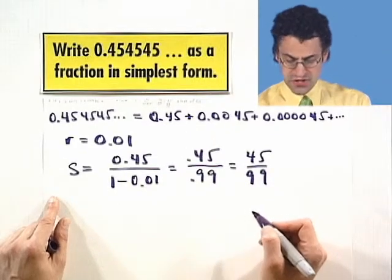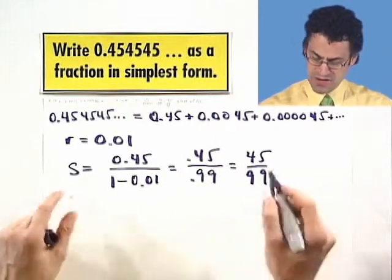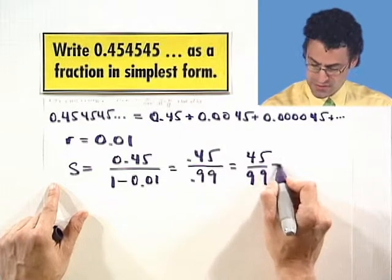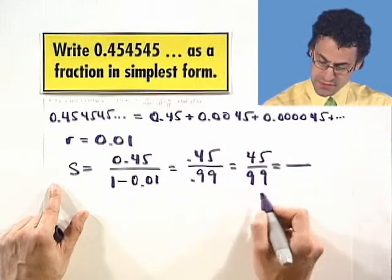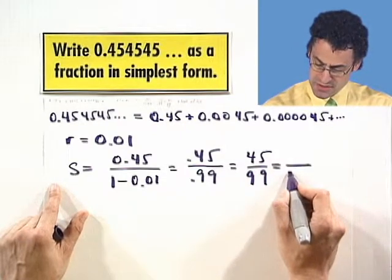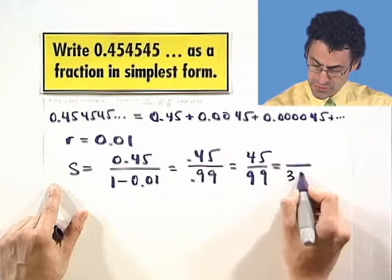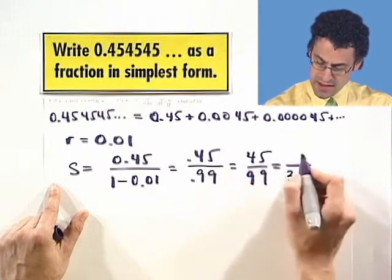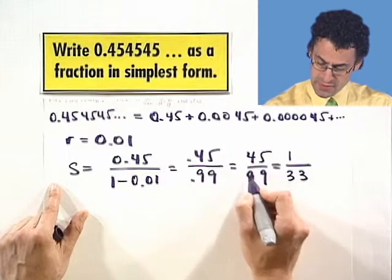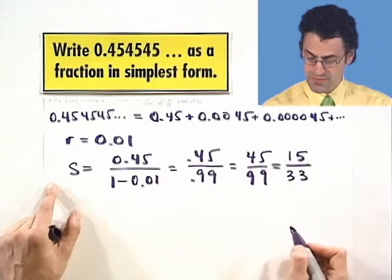Now, you can actually check this answer, but we want it in simplest form. So we should actually notice there's a factor of 3 on the top and 3 on the bottom. So on the bottom, I get a 33, and on the top, I get a 1, and then I have a 3, 15, so I see a 5. So I see 15 over 33.